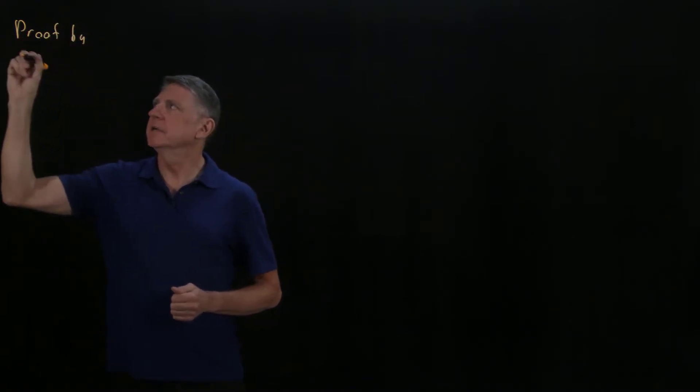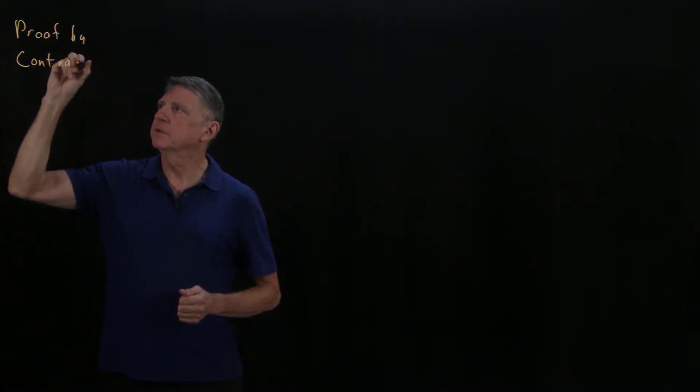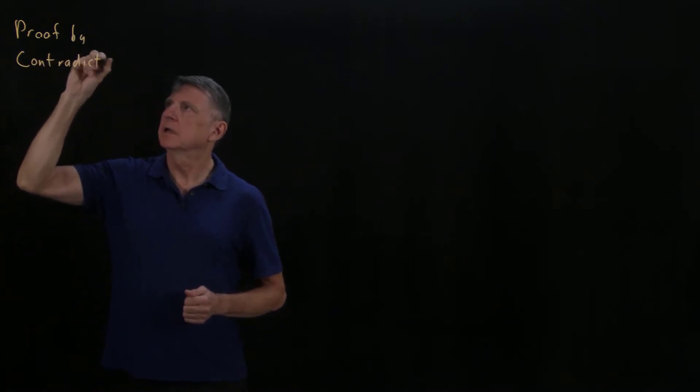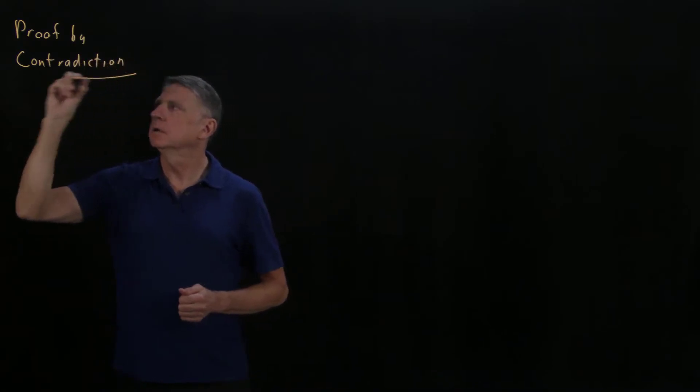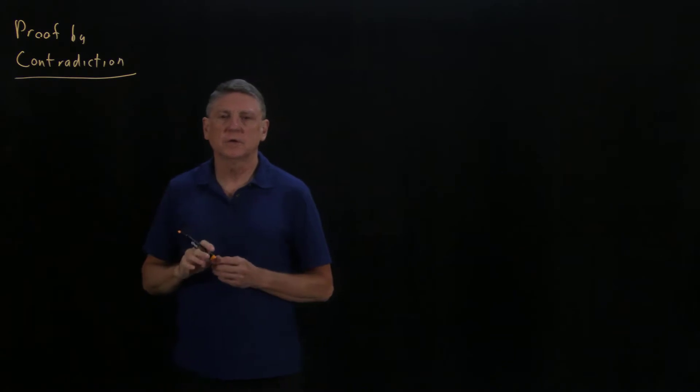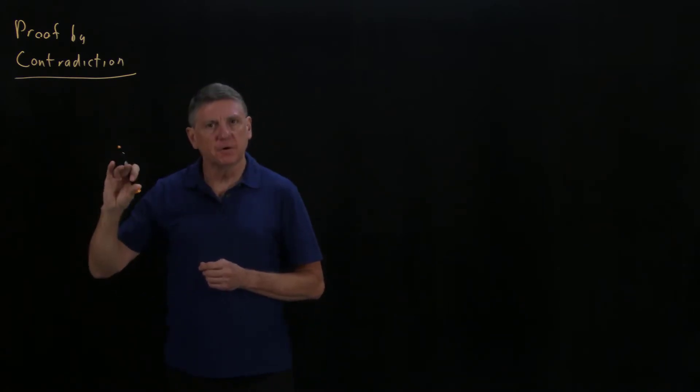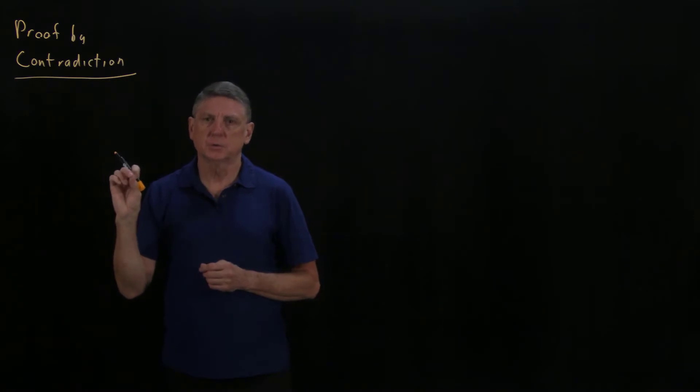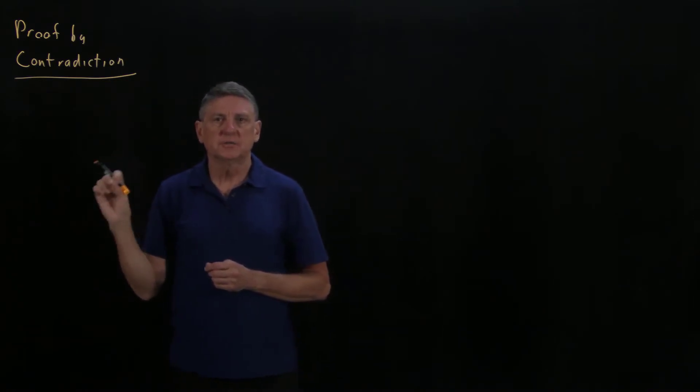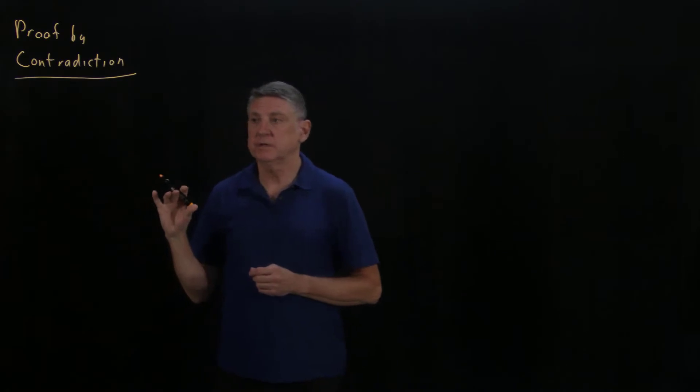Proof by contradiction is closely related to a different kind of proof that uses contradiction. In a previous session, we began exploring what we called negation introduction, which was a proof that involved the use of the contradiction or bottom symbol. We also explored some of the rules around double negation. Proof by contradiction is closely related to both of these.